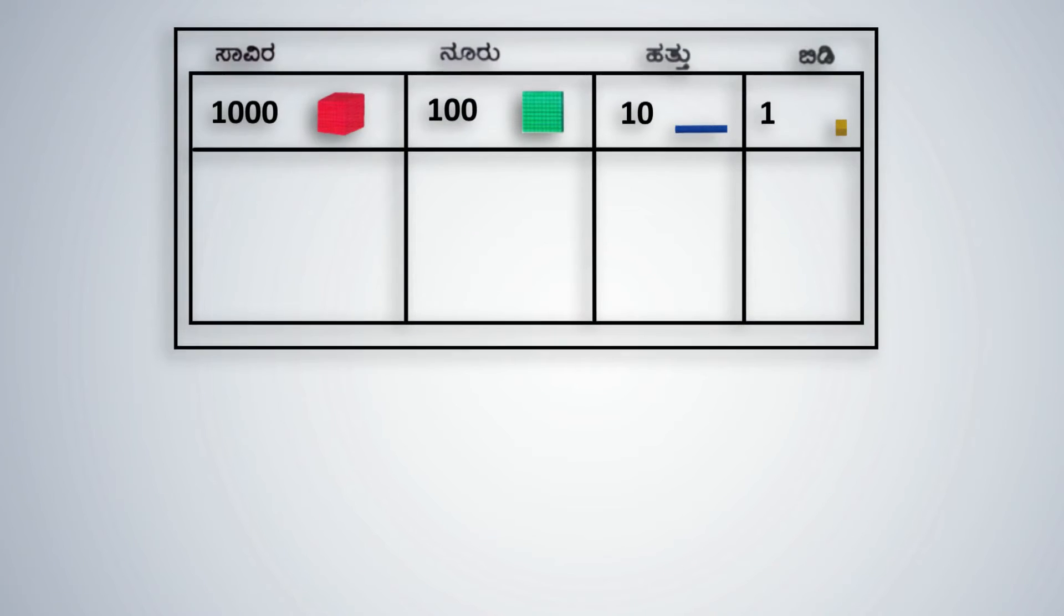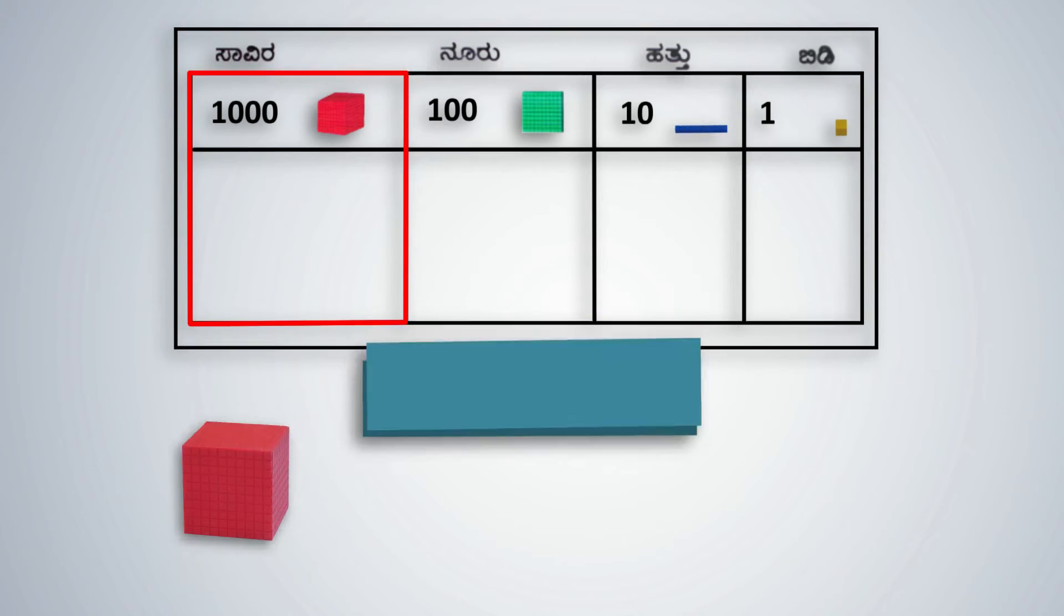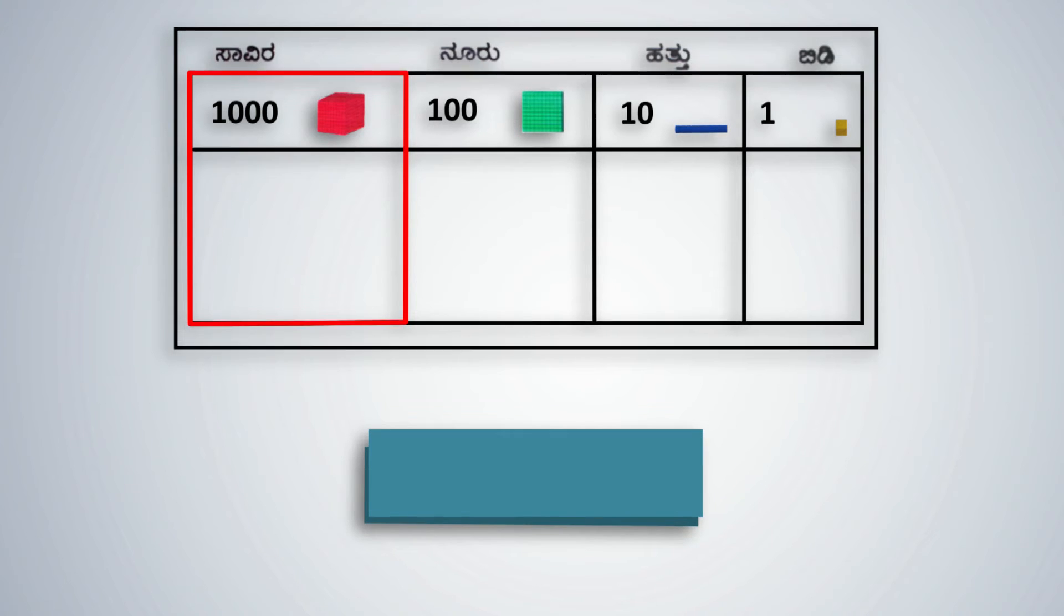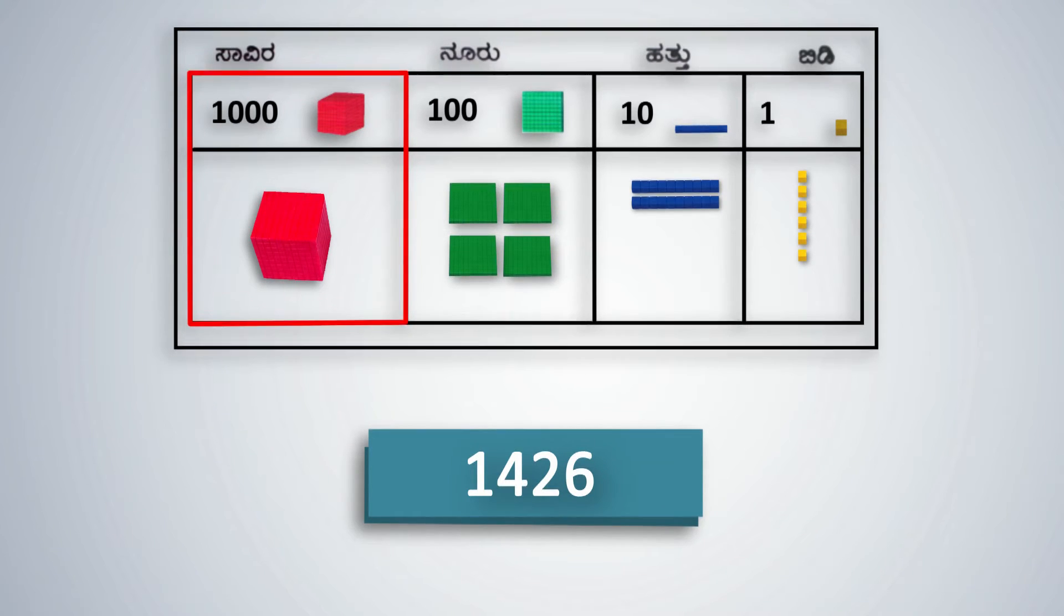Now let's look at 4-digit numbers. The red cube in the math kit represents a 1000. The 1000s place is 1 place to the left of the 100s place. Show how to represent a 4-digit number using base 10 blocks. 1,426, for example, is 1 red cube, 4 green plates, 2 blue rods, and 6 yellow cubes.